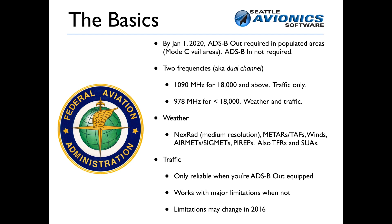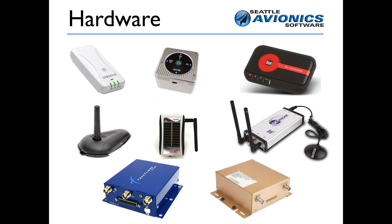Many of these limitations may change in early 2016 when the FAA is considering broadcasting all traffic all the time. As for hardware, there are tons of ADS-B systems on the market — from Stratus, Clarity, Dual, Garmin, and iLevel. There are certified systems from FreeFlight and NavWorks, and SkyRadar systems — more than you can count.